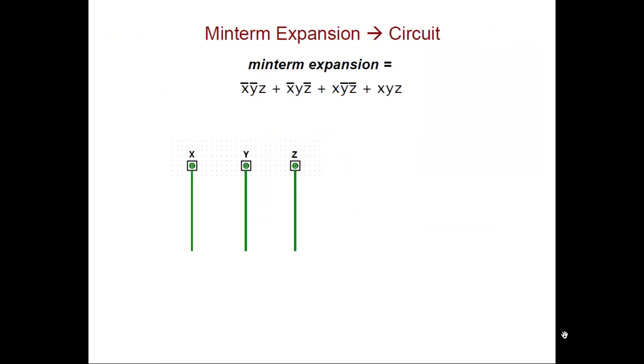We can then take the min-term expansion and create the corresponding circuit. So we have our inputs, and you can see we have a line for each of those inputs. Then for each min-term, we're going to create an AND gate.